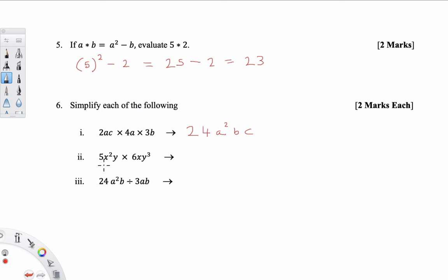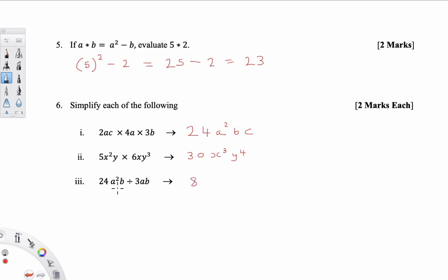For part 2, multiply the coefficients: 5 and 6 multiply to give 30. I have X squared multiplied by a single X, giving X to the power of 3. And 1 Y multiplied by Y cubed gives Y to the power of 4. For part 3, it is division, so divide the coefficients: 24 divided by 3 is 8. A squared divided by A leaves a single A. And B divided by B leaves no B's. So the answer is just 8A.